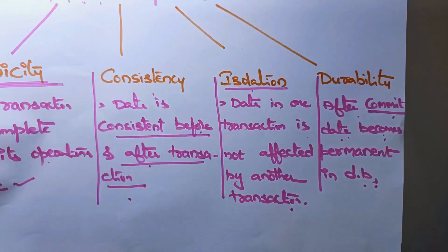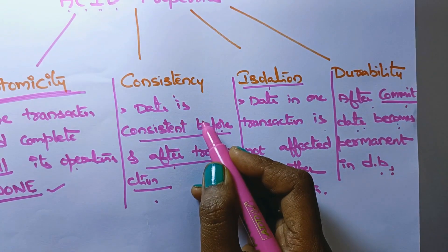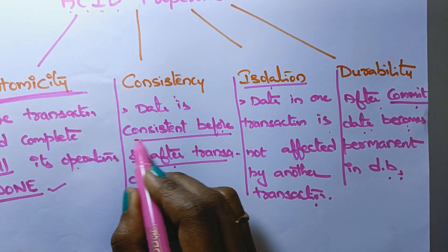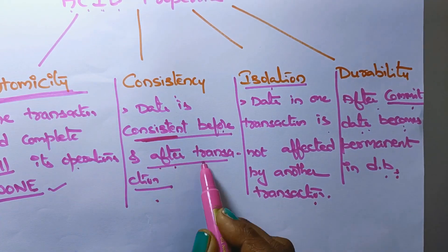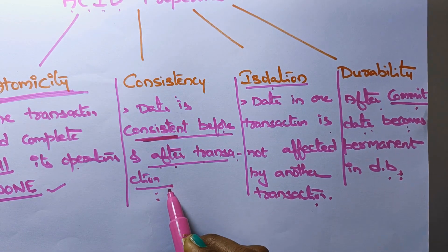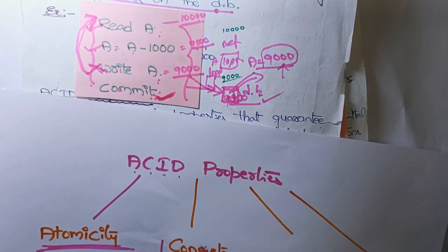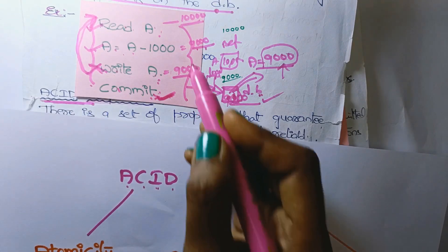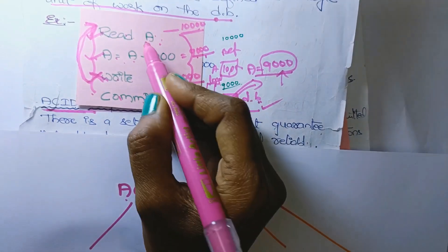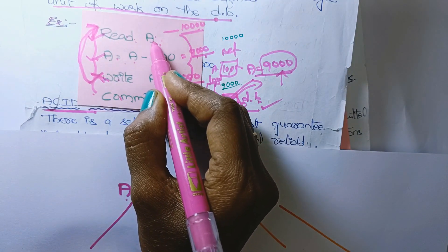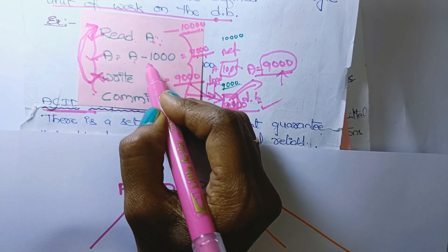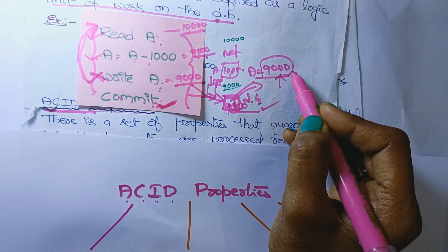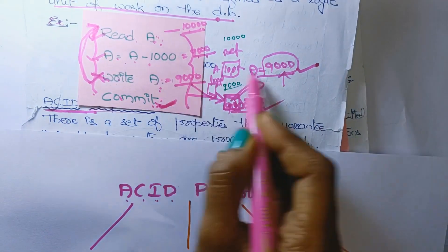The next property is Consistency. Consistency means the data is correct before and after the execution of a transaction. Before and after the execution, it should maintain correct values. Before the execution, A's value is 10,000. After the completion of execution, A's value is 9,000. So it is maintaining consistency.